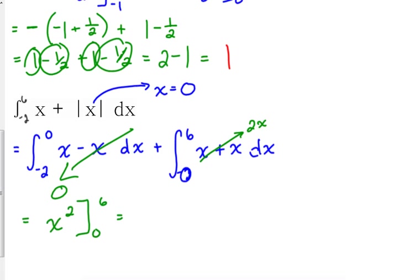From zero to six. So, plug in the six. Plug in the zero. Final answer. Thirty-six. So, that one actually looked a little bit more complicated to begin with. But, it turns out, it was a lot easier. Because part of it just disappeared. Part of it disappeared.